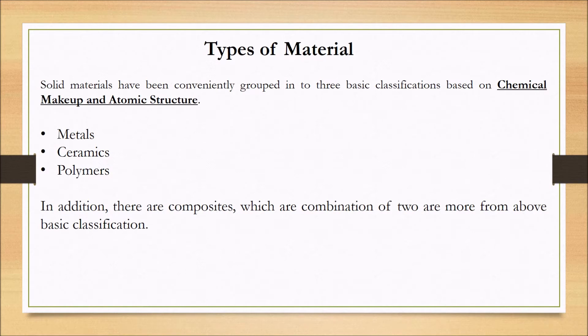To start with, we will see different types of materials. Based on chemical makeup or atomic structure, solid materials have been classified into three types: the first one is metals, the second one is ceramics, and the third type is polymers. In addition to these categories, there are composites, which are combinations of two or more from the above listed categories.